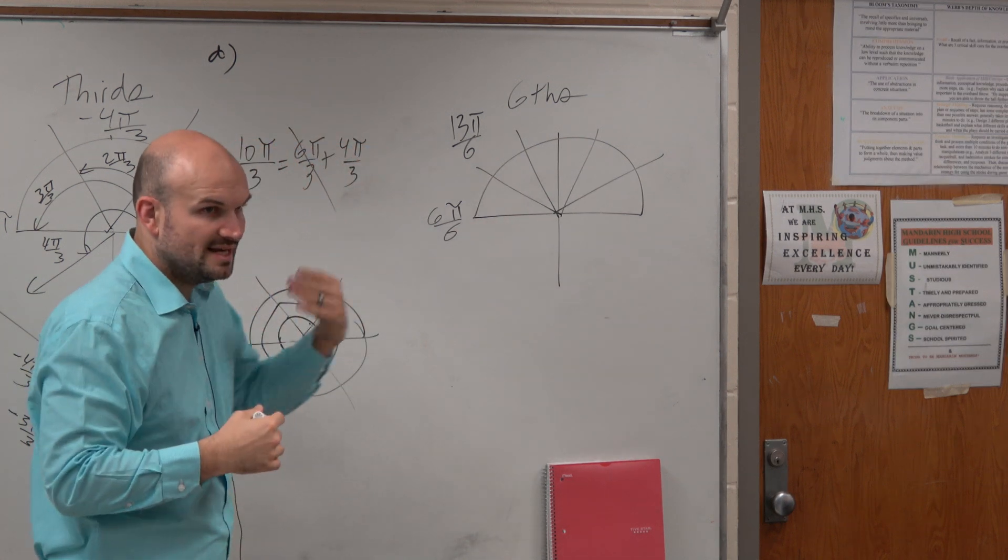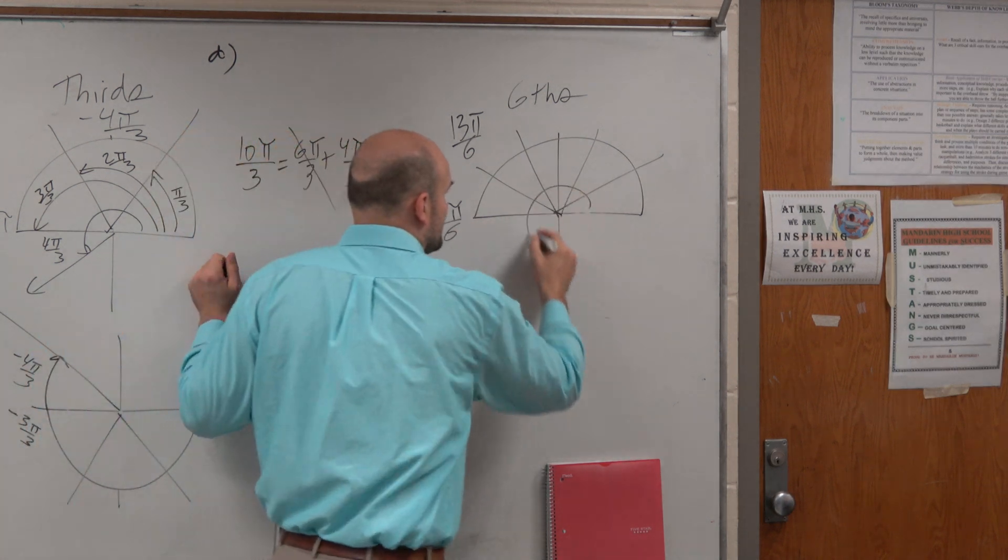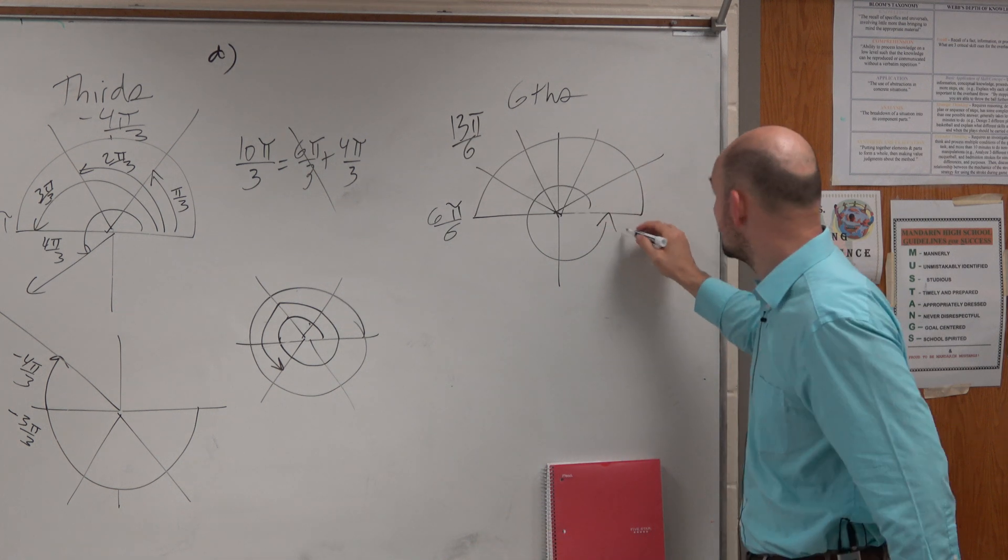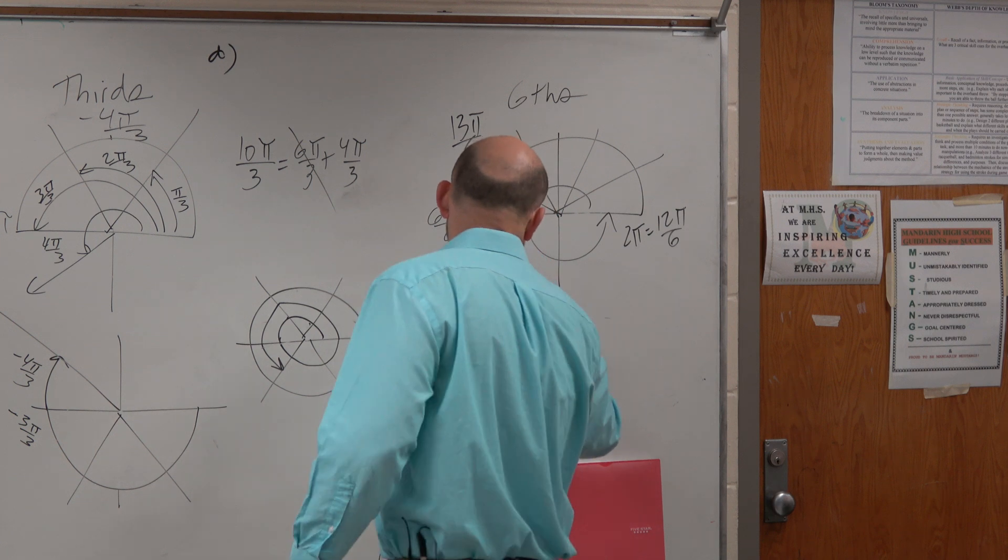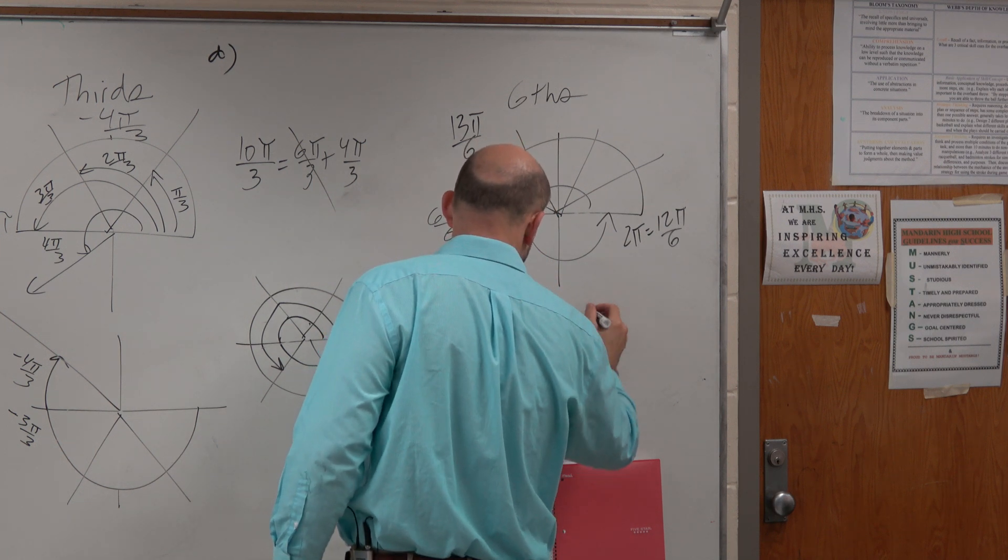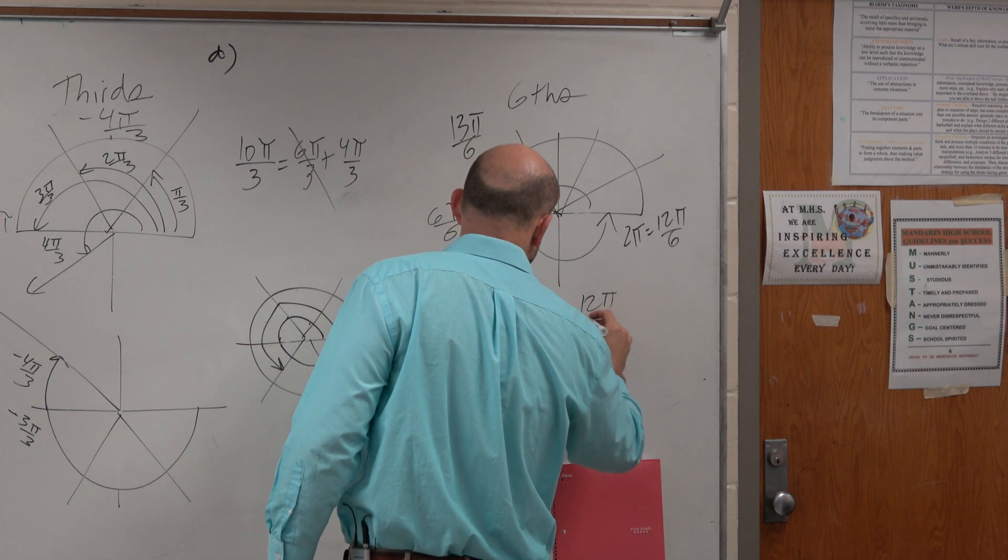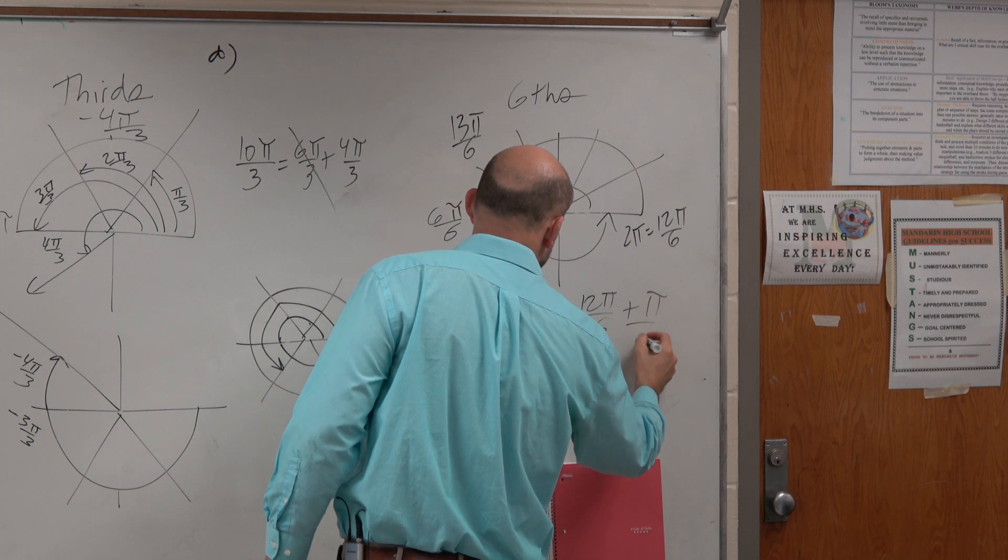So again, what is an easier way to understand? We know that all the way around the circle is 2 pi, but it's also equal to 12 pi over 6. So therefore, I can rewrite 13 pi over 6 is equal to 12 pi over 6 plus pi over 6.